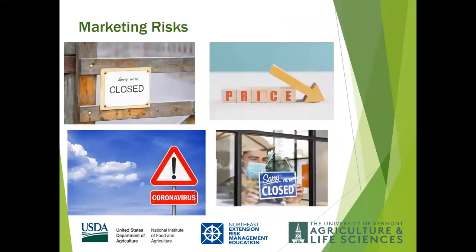Sometimes events beyond your control may impact the market for what you produce, and even a small unexpected disruption can seriously affect farm income. Examples of market risks include a lack of access to markets, a drop in prices, competition, and loss or change of markets. For example, when coronavirus restrictions caused restaurants to abruptly close, many Vermont farmers experienced an immediate unexpected halt of that market channel. Even short-term interruptions such as weather closures can impact projected income, and there is limited shelf life for farm fresh commodities.